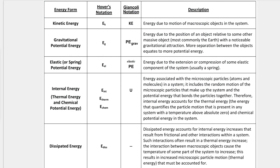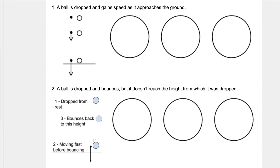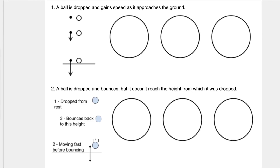Let's jump back and look at the energy forms we talked about before. I'll post a link to this document in the video description if you'd like to take a closer look. These are the forms of energy that we typically want to track in a typical physics problem. Let's look at a couple of examples — in number one we have a ball being dropped.